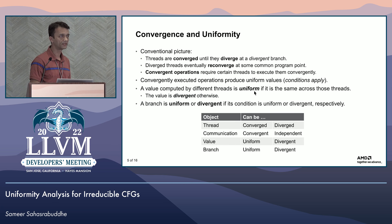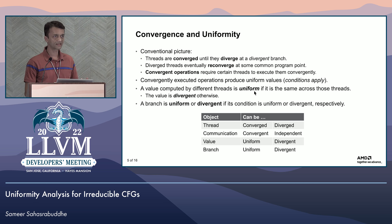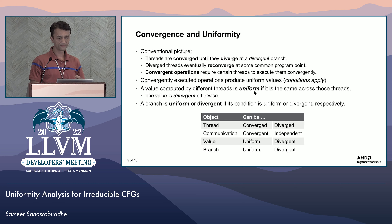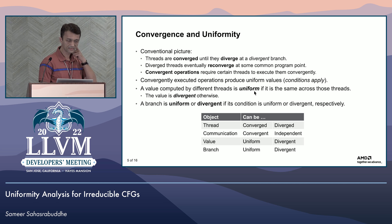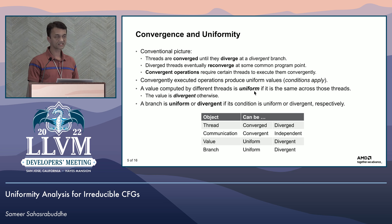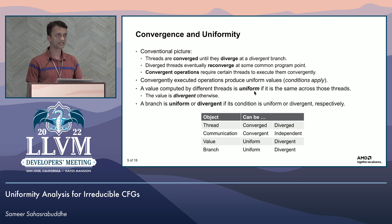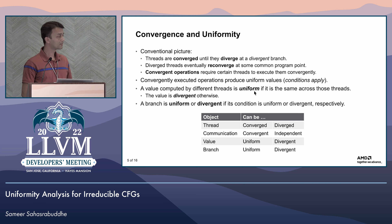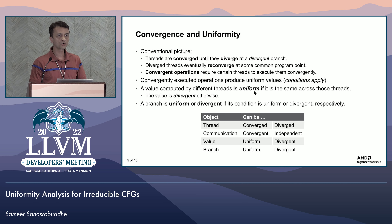Convergence and uniformity are very closely related concepts. The conventional picture is that threads start off as converged until they diverge at a divergent branch, and diverged threads eventually reconverge at some common program point later in the program. Convergent operations require certain threads to execute them convergently — we will not be looking at convergent operations, but they are important backdrop. Convergently executed operations produce uniform values; these are operations that happen to be executed convergently and are the ones that produce uniform values we can analyze. A value computed by different threads is defined to be uniform if it is the same across those threads — it is sensitive to the scope of threads being discussed, but in this analysis we take the scope as the universal set of all threads executing the same program.